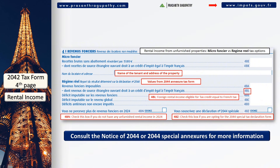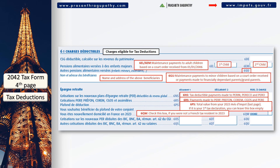Scrolling down on page 4, you can declare the various charges eligible for tax deductions in section 6. These include family maintenance payments to adult children, minors, parents, and grandparents — you must add the details of these beneficiaries. If you have made any tax-deductible payments to your retirement savings accounts in France, you can add them as shown on the screen.